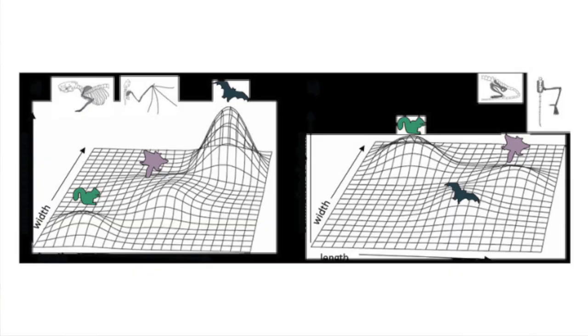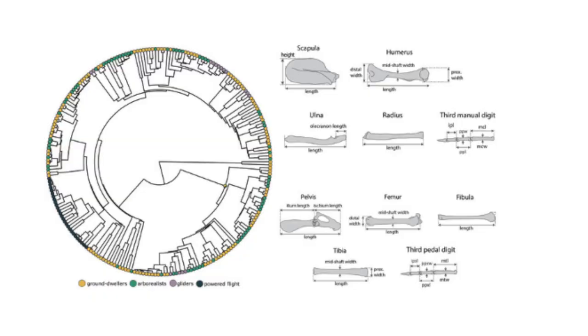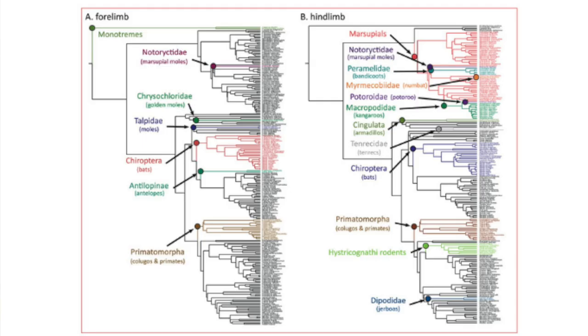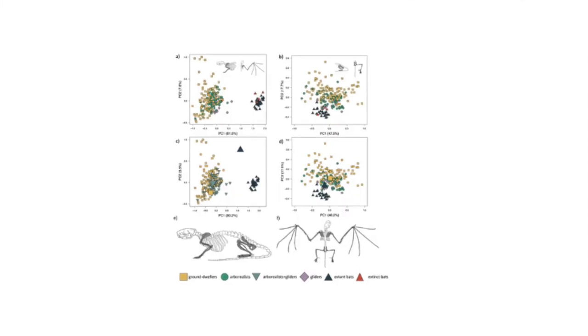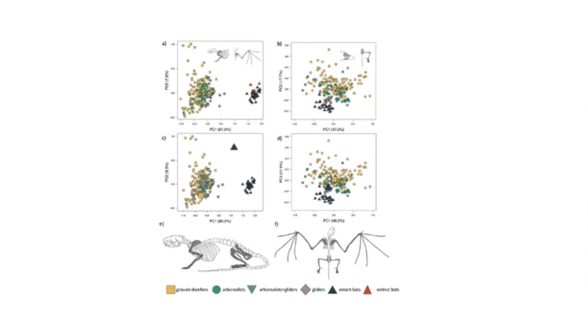So the next best thing we can do is look at modern animals to try to understand that pattern better, and that's what we did in this paper. We took a bunch of skeletal measurements across different mammals, including bats with flight, gliders, and mammals that live in trees. We're essentially testing to see if there are unique morphologies associated with bats, gliders, and tree dwellers. We used evolutionary models to test for selection towards those three types of locomotion, specifically wanting to see if gliders fell intermediate to bats and arboreal species with a more generalist morphology.